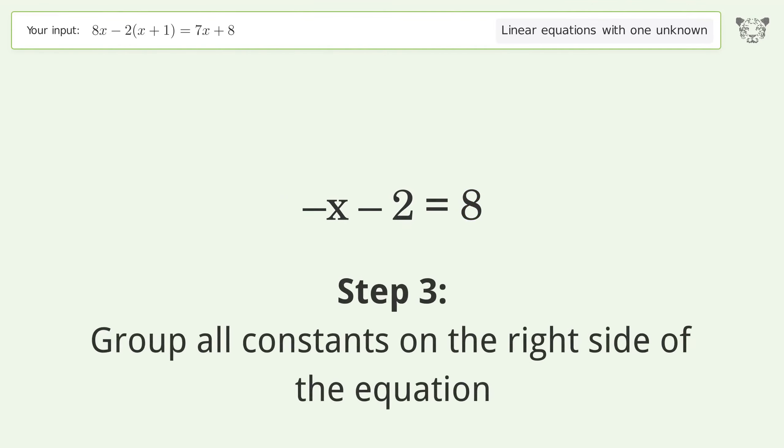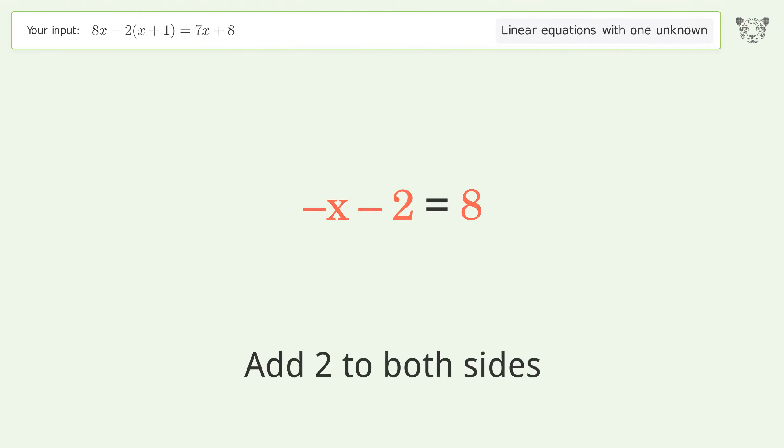Group all constants on the right side of the equation. Add 2 to both sides. Simplify the arithmetic.